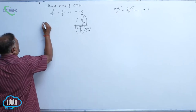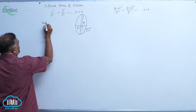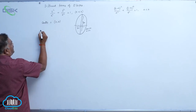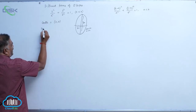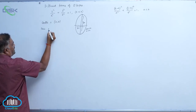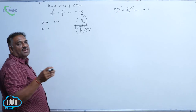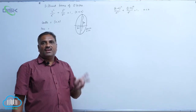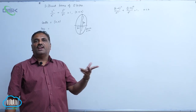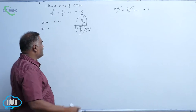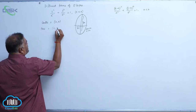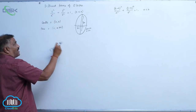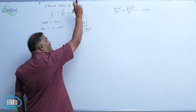We will write one by one. Center is equal to (0, 0). Foci: previously it is (±ae, 0); wherever a is there, you can write b. That is (0, ±be). Why? Because it is on the y-axis.